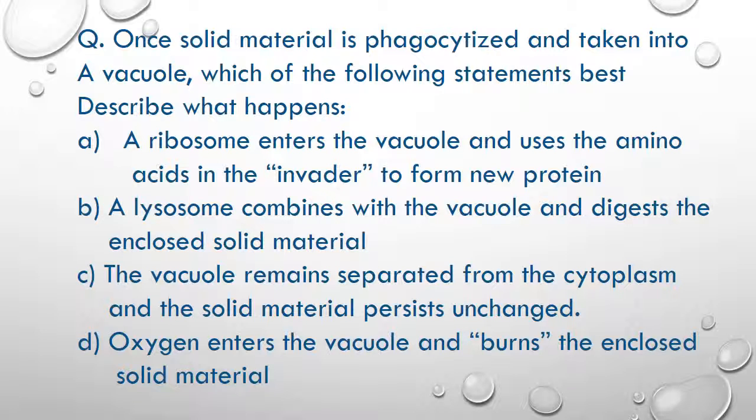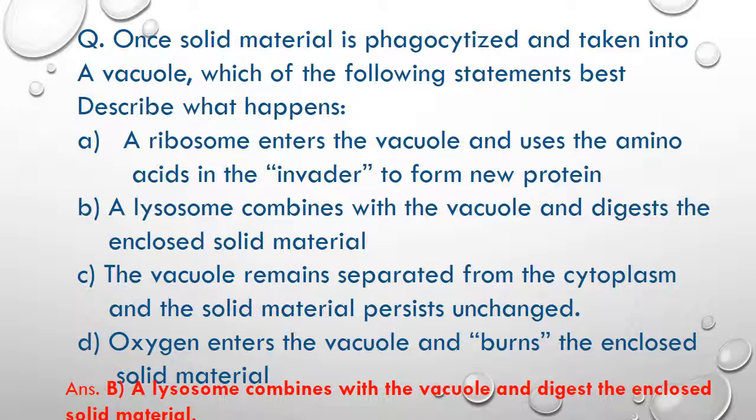Once solid material is phagocytized and taken into a vacuole, which statement best describes what happens? A. a ribosome enters and forms new protein, B. a lysosome combines with the vacuole and digests the solid material, C. the vacuole remains separated and material persists unchanged, or D. oxygen enters and burns the material. The correct answer is B. A lysosome combines with the vacuole and digests the enclosed solid material.